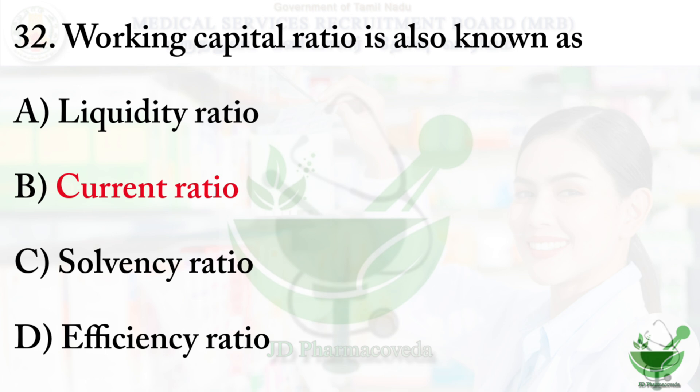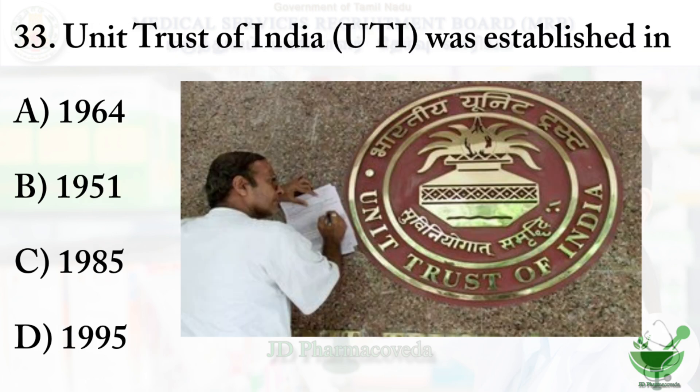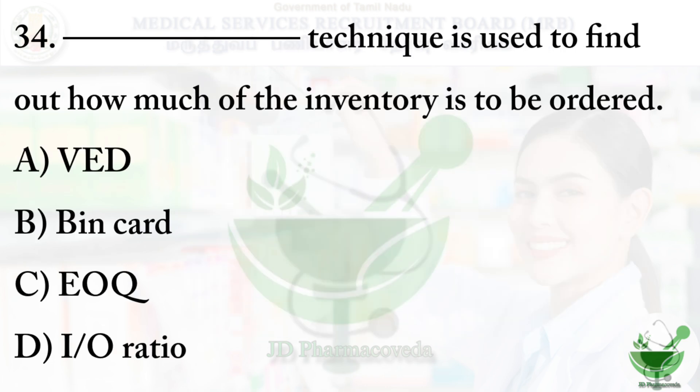Question number 33: Unit Trust of India was established in — option A 1964, option B 1951, option C 1985, option D 1995. The correct option is option A, 1964.